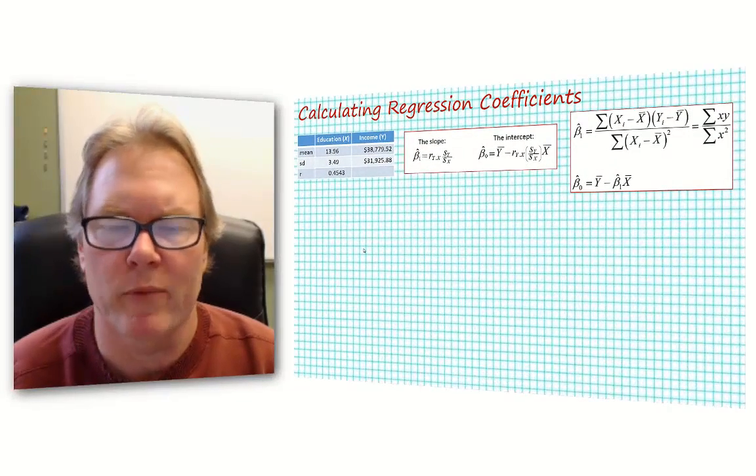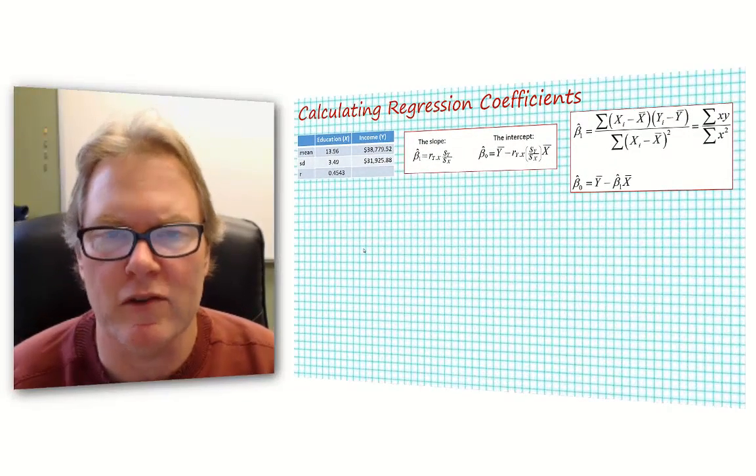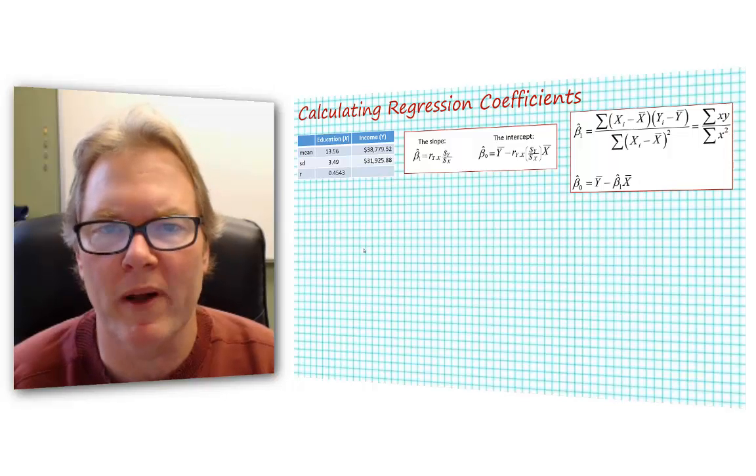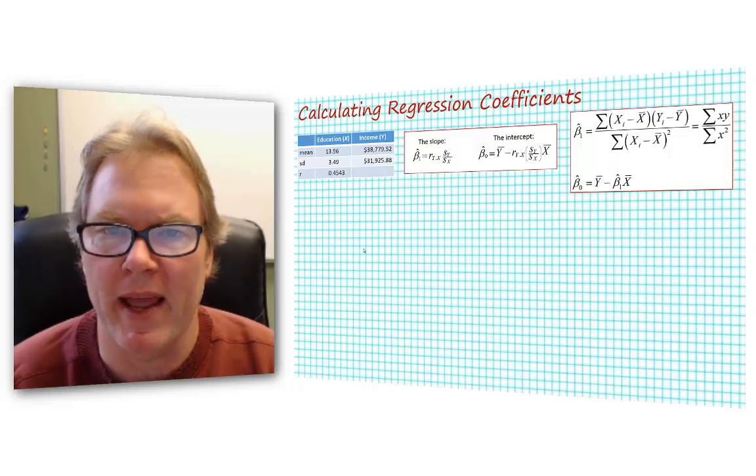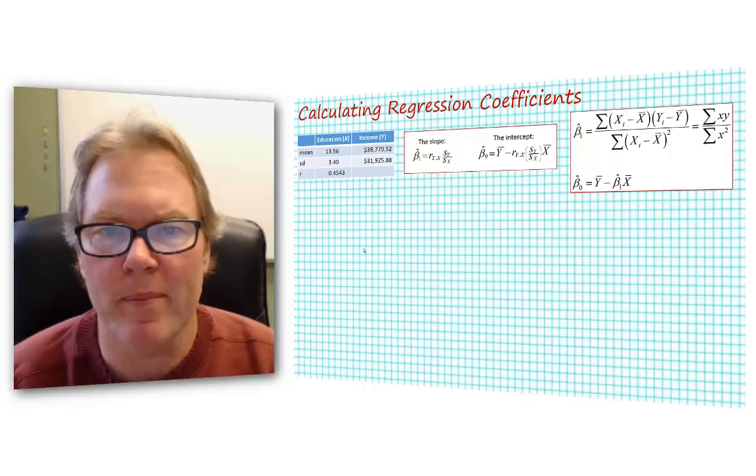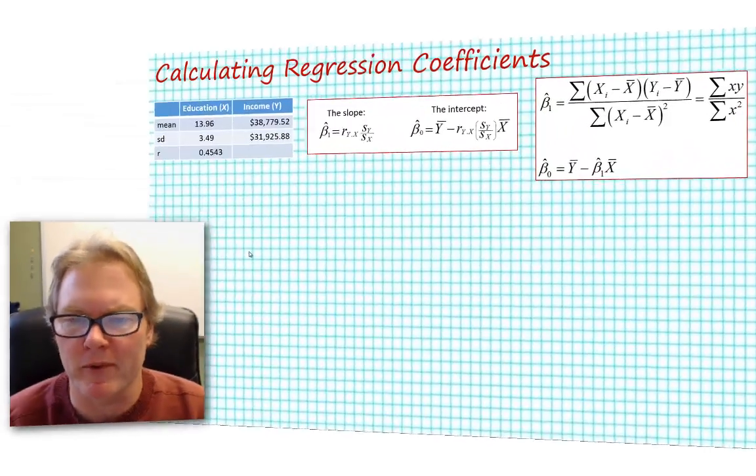In this video I'm going to show you how to calculate regression coefficients. We'll calculate the slope coefficient, beta hat sub 1, and the constant or intercept, beta hat sub 0, and we'll use two different methods depending upon what kinds of information we have available to us.